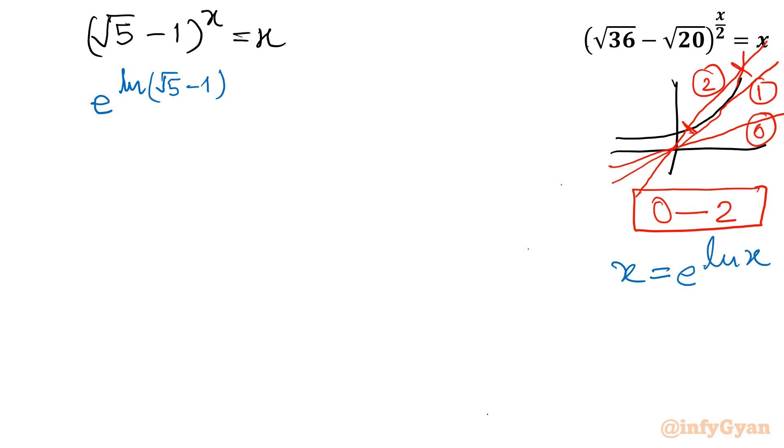Root 5 minus 1 base has been changed. Now by the property, x is equal to e raised to the power ln x. X is also there, so equal to x. Now I will take this term to the right. So it will come out as x times e raised to the power minus x ln root 5 minus 1 equal to 1.